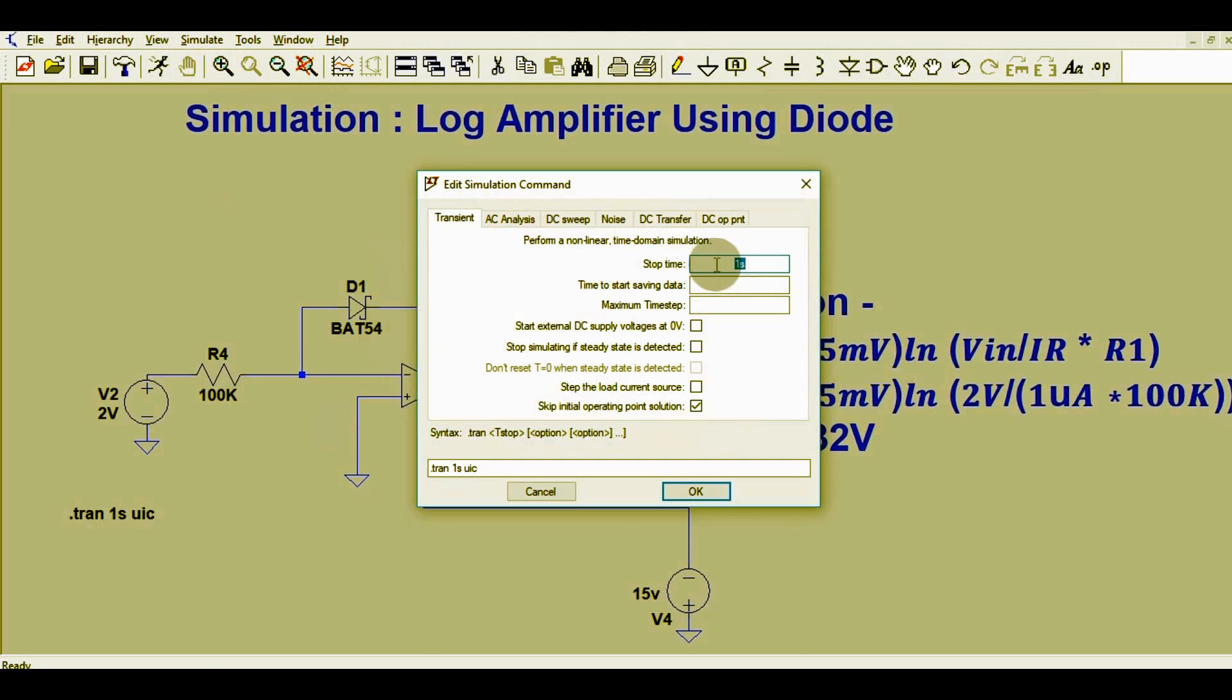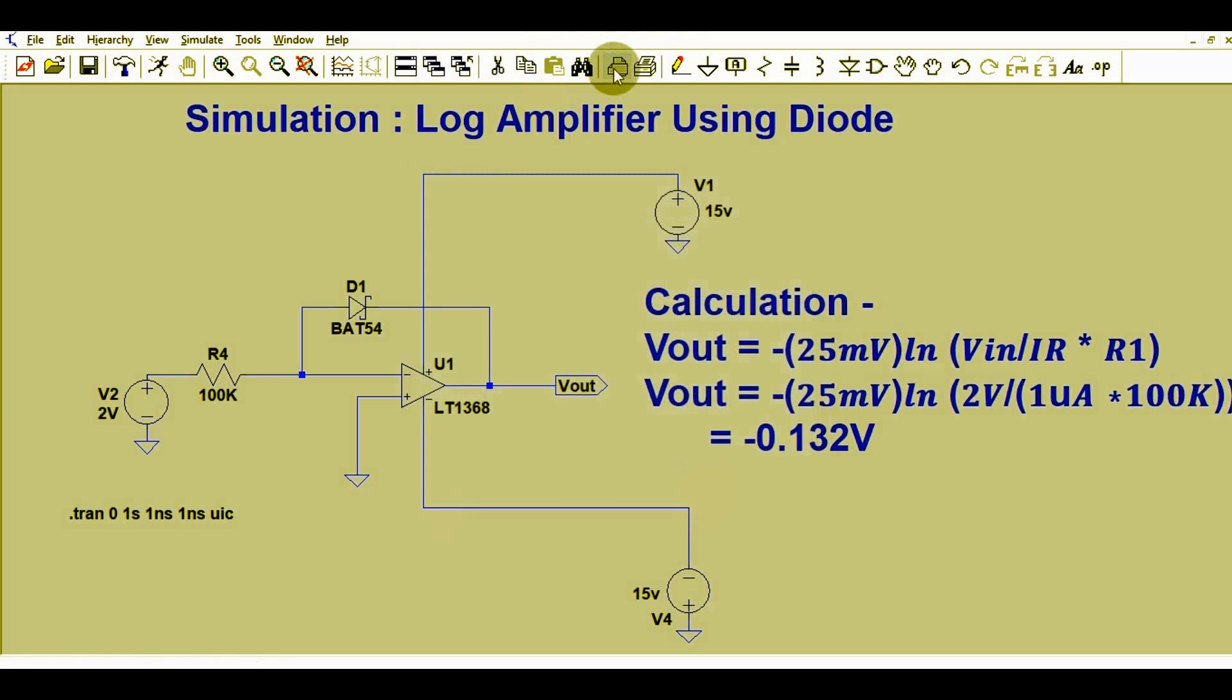For this circuit, I kept the stop time as 1 second. Then you can also write time to start saving data - that could be 1 nanosecond. Maximum step size could also be 1 nanosecond. You have to tick 'skip initial operating point solution'. This is your transient command.